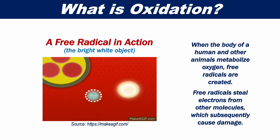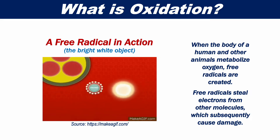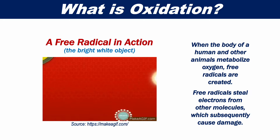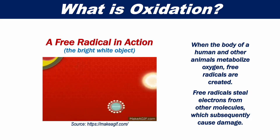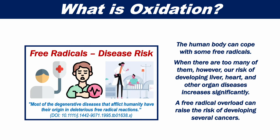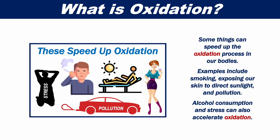When the human body and other animals metabolize oxygen, free radicals are created. Free radicals steal electrons from other molecules, which subsequently causes damage. The human body can cope with some free radicals, but when there are too many, our risk of developing liver, heart, and other organ diseases increases significantly. A free radical overload can also raise the risk of developing several cancers.